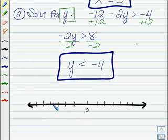If I come here to my number line, I'll have negative 4 here. It will be an open circle at negative 4, and y will be everything less than.